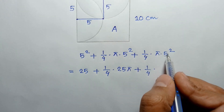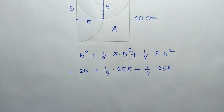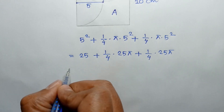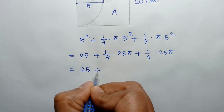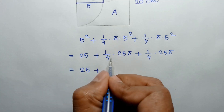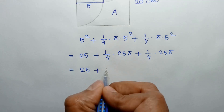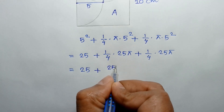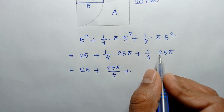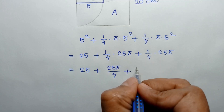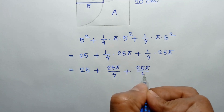This equals 25 plus 25π over 4 plus 25π over 4.